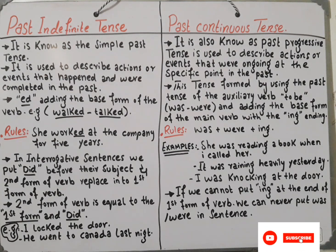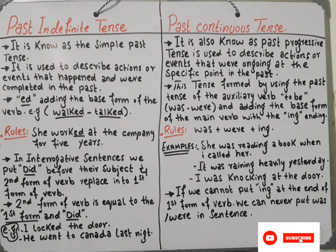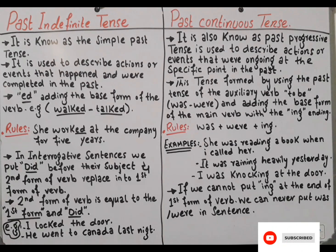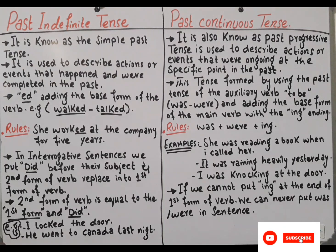For example, irregular words have a unique past tense form, like 'went' instead of 'go'. There is a rule sentence: 'She worked at the company for five years.' The word 'worked' indicates it is a past simple tense — when 'ed' is added to a verb, it is a simple past tense.